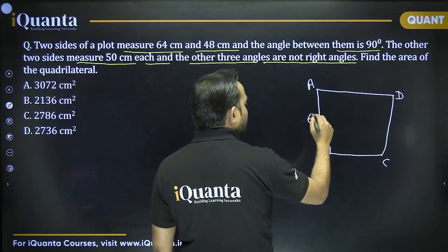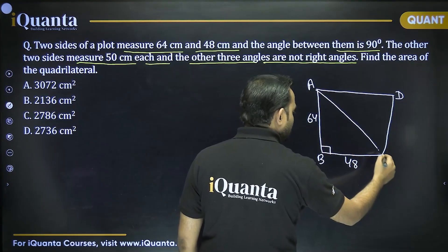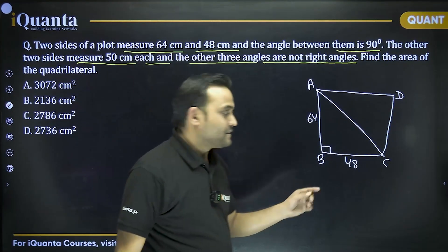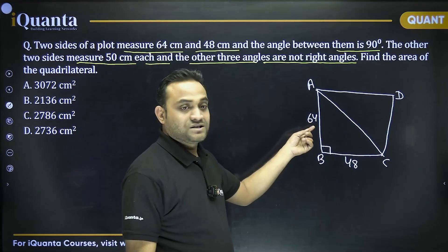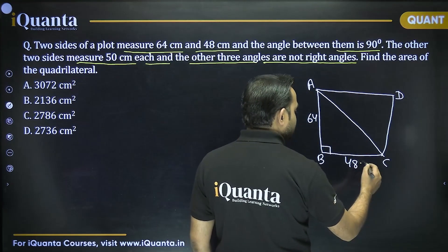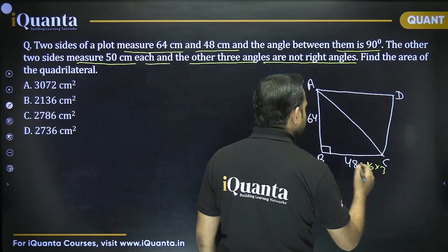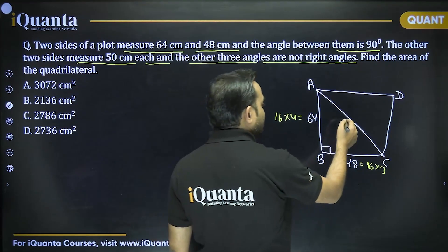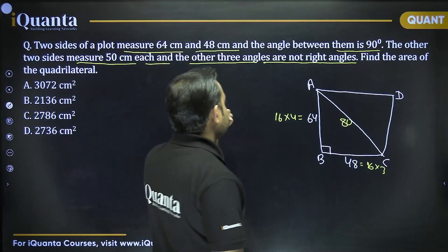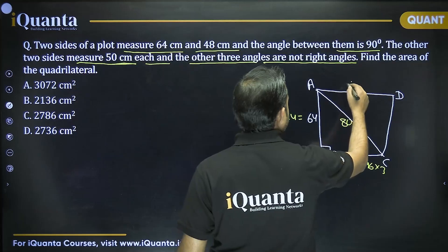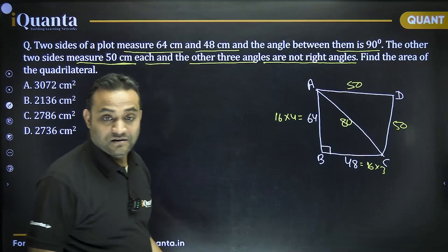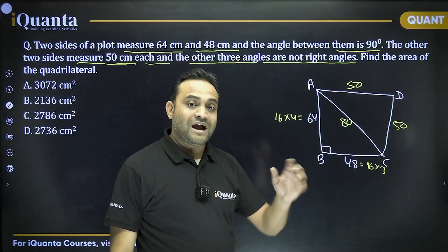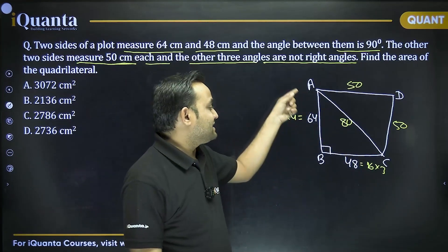So we have quadrilateral ABCD where AB = 64 and BC = 48, with angle B = 90°. Triangle ABC is a right triangle. Using Pythagorean theorem: 48 = 16×3 and 64 = 16×4, so AC = 16×5 = 80. The other two sides AD and CD each measure 50 cm.